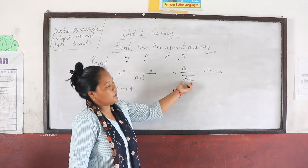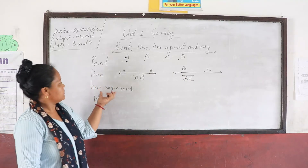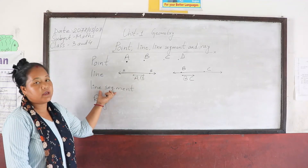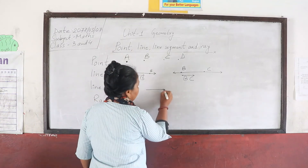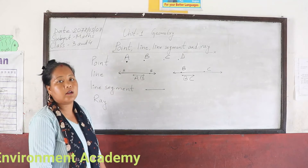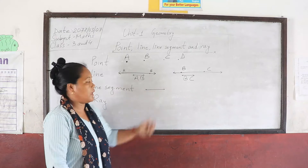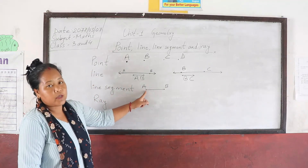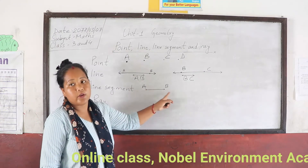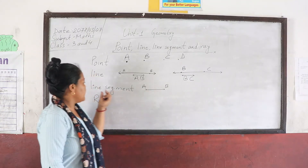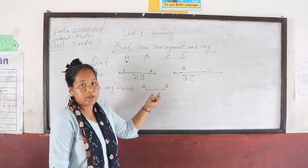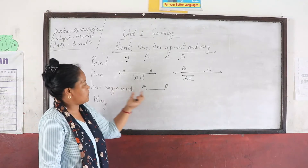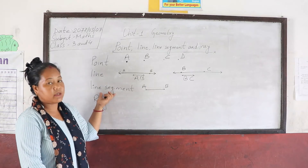Next topic is line segment. A line segment is a part of a line, and it has a fixed length. The line which has a fixed length is called a line segment. The line which has fixed endpoints — those are line segments. In a line segment we have endpoints and a definite fixed length. In a line we do not have fixed length.